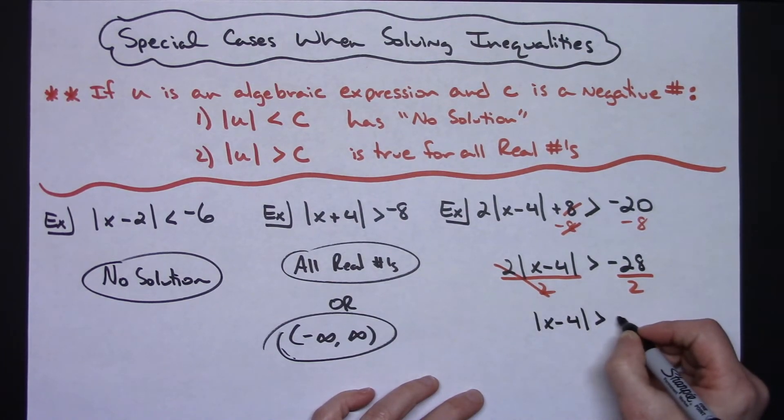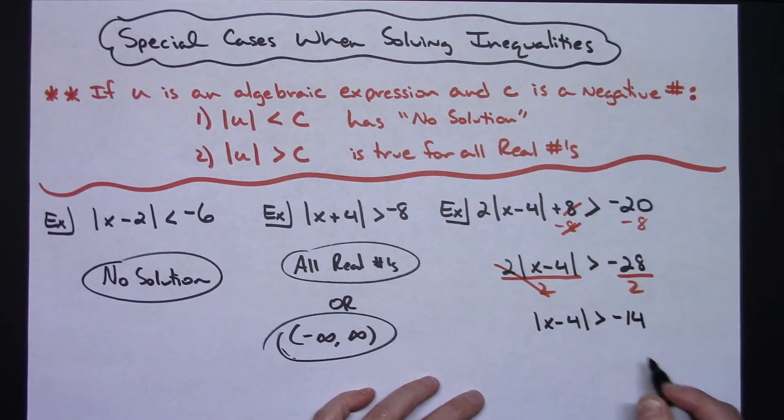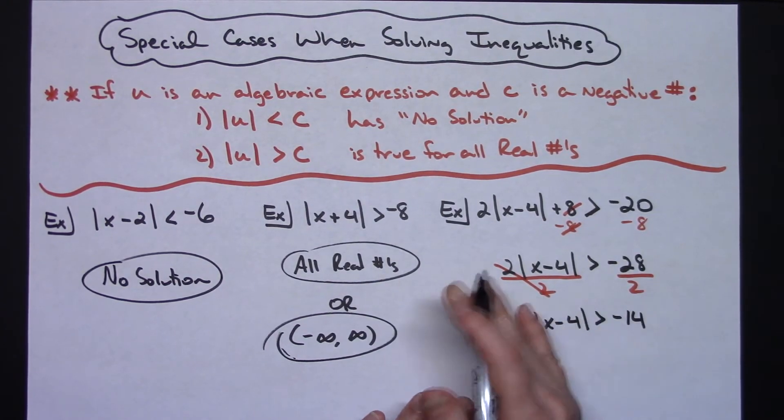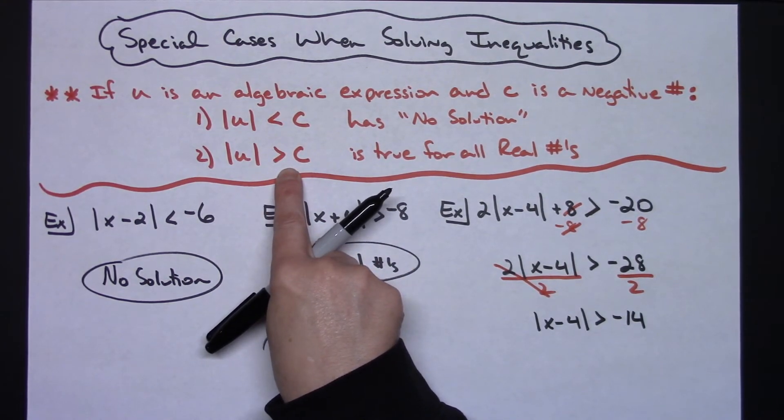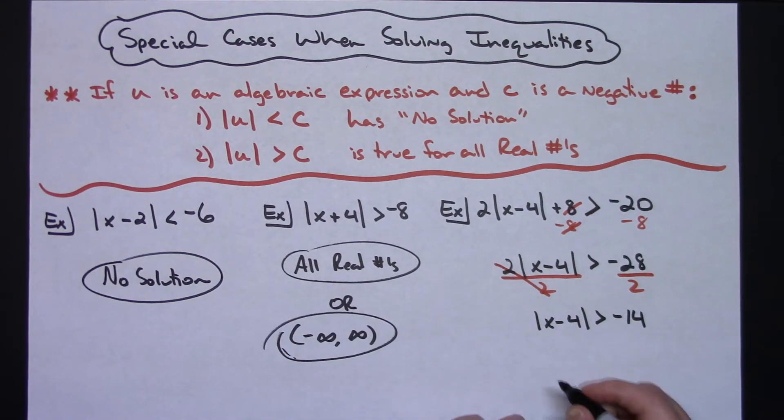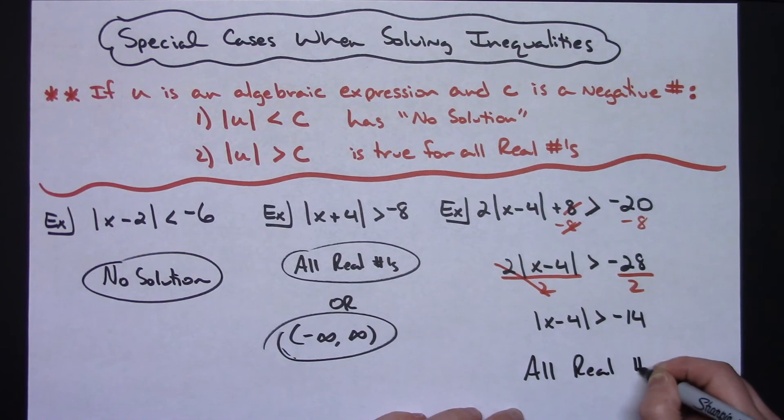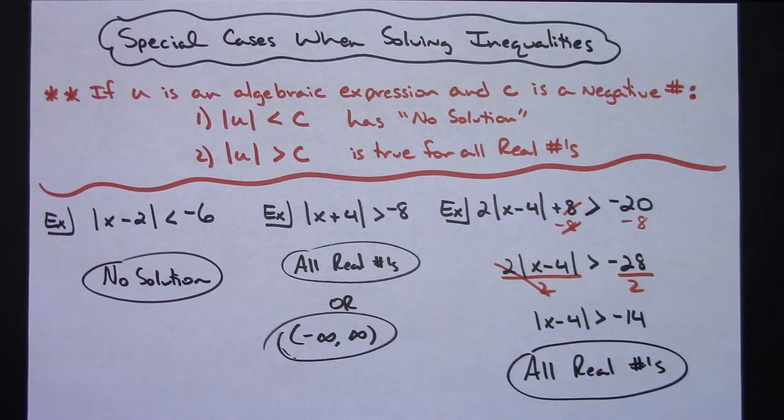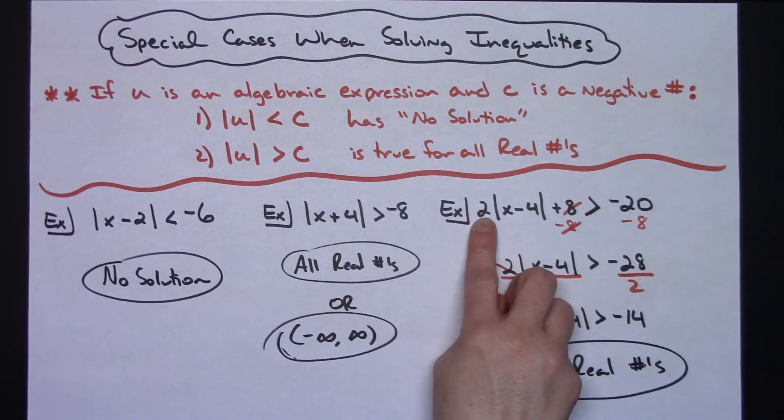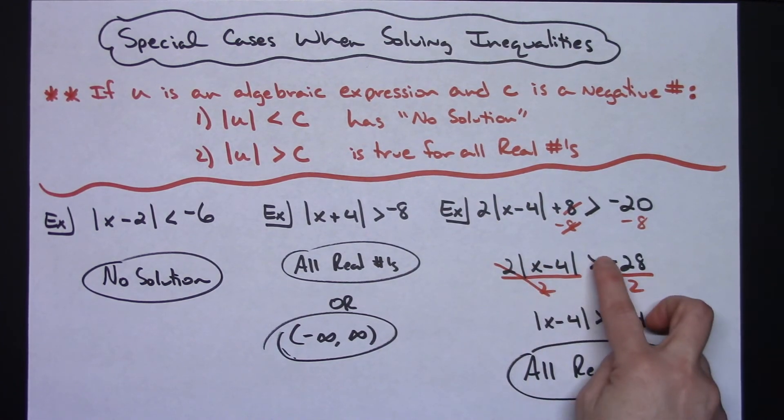I am now down here to where my absolute value bars have been isolated, and I am still greater than a negative number. So in this case it did not change my result there. Since I'm greater than a negative number, then this one again is going to be all real numbers. But just keep in mind that just because this example did not change, it could have very easily changed. Had that been a negative 2 right there, when I divided by the negative 2, I would have had to flip the sign, which would have turned this one into no solution.